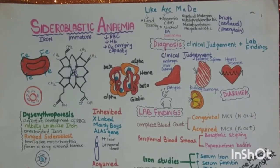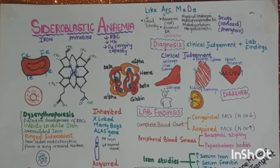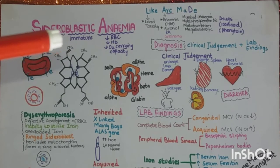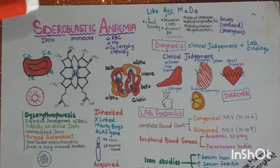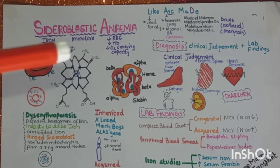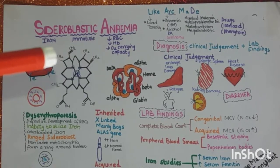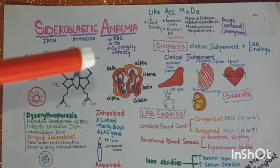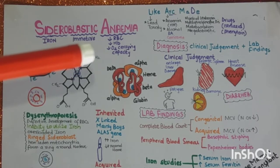Assalamu alaikum friends, this is Dr. Fatma. Today we are going to study sideroblastic anemia — a quick review. Sideroblastic anemia: 'sidero' means iron, 'plastic' means immature cell, and anemia means decreased RBC, decreased hemoglobin, and decreased oxygen carrying capacity.